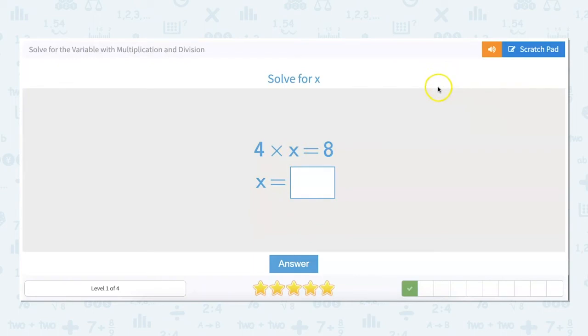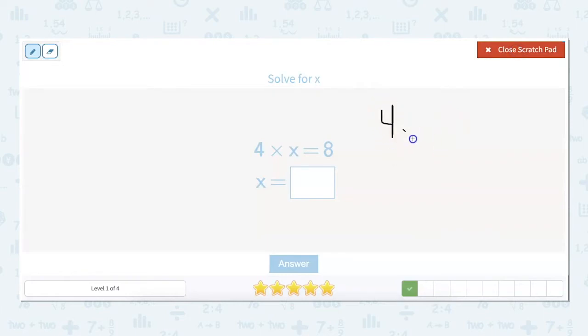This is pretty close to the same one that we just did but we'll go ahead and try it again. So 4 times x equals 8. We're going to get rid of this number, 4 divided by 4. 4 divided by 4, 8 divided by 4. That leaves us with x equals 2.